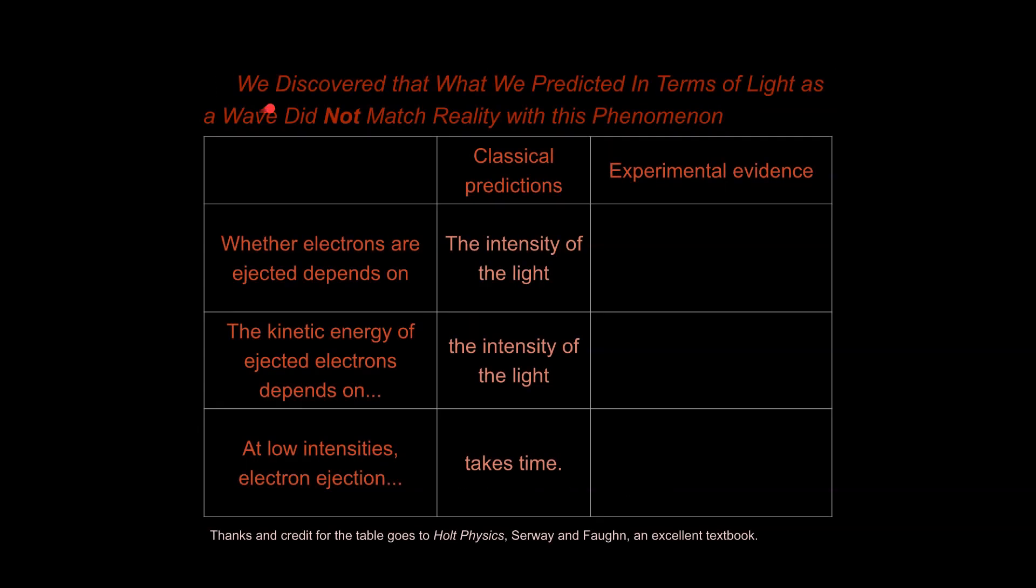And so let's take a moment to think about what we observed. What we observed did not match what was expected. So first of all, we would expect that whether or not electrons are ejected from a metal surface would depend on the intensity of the light. So how bright the light was, meaning the overall effect of the wave of light hitting it could be enough to knock off electrons. And that would make sense. So secondly, we expected that the kinetic energy of electrons depends on the intensity of the light.